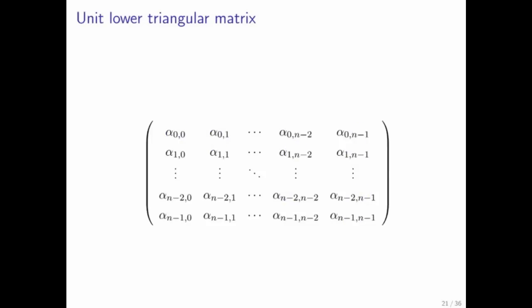A unit lower triangular matrix has ones on the diagonal, just like the identity matrix, has zeros above the diagonal, and no restrictions on what's below the diagonal.